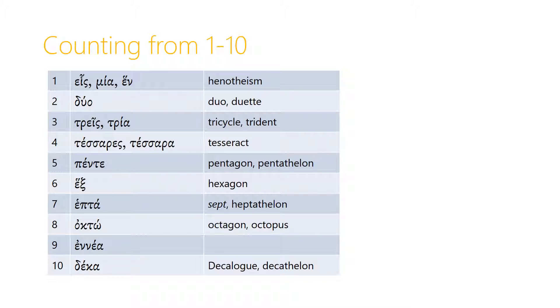Number three is trace or tria, and this gives us words like tricycle and trident in English.